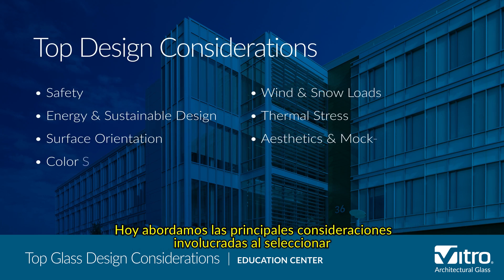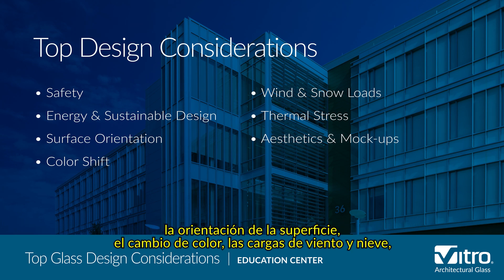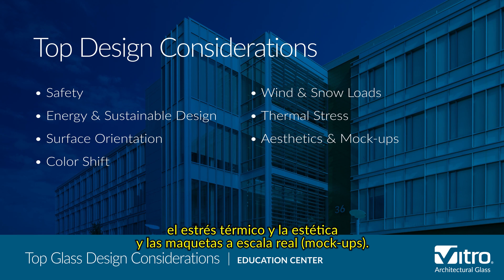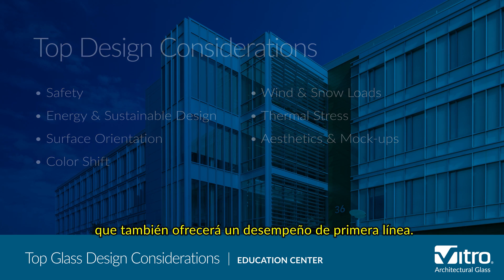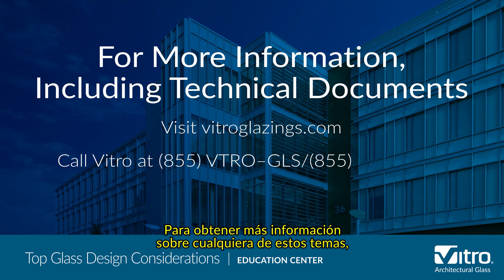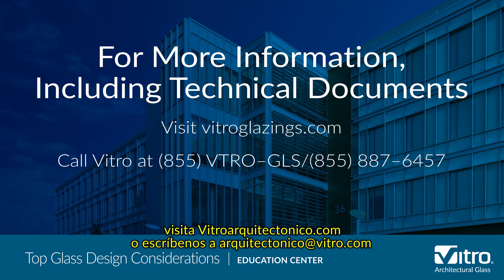Today we covered the main considerations involved when selecting or specifying glass, including safety, energy and sustainable design, surface orientation, color shift, wind and snow loads, thermal stress, and aesthetics and mock-ups. Keeping these and other factors in mind will help ensure an aesthetically amazing project that also delivers top-of-the-line performance. For more information about any of these topics, including related technical documents, please visit vitroglazings.com or call 855-VTRO-GLS, 855-887-6457.